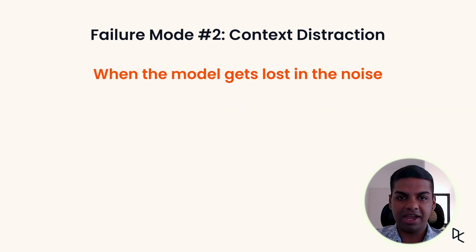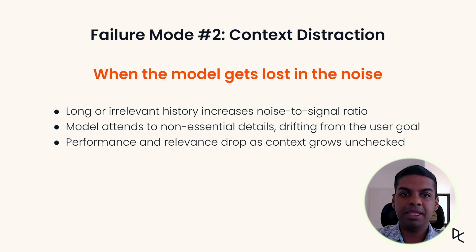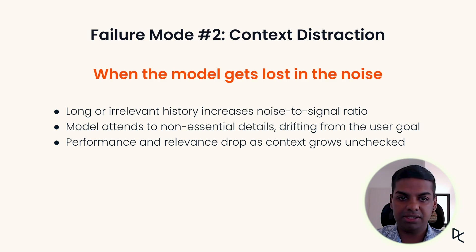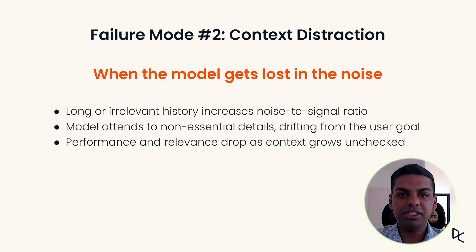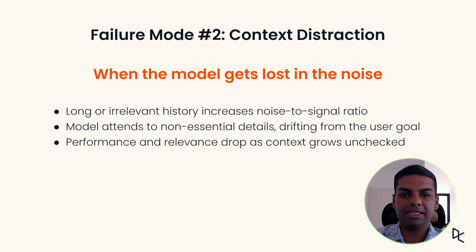Next, context distraction. This happens when a model is fed too much or the wrong kind of history. Even true details can be distracting and irrelevant to the task. The fix is to compress and summarize long histories, keep recent and task-relevant details, and use retrieval to pull only the most useful snippets — this will help reduce context distraction.